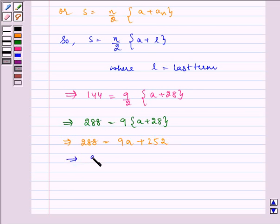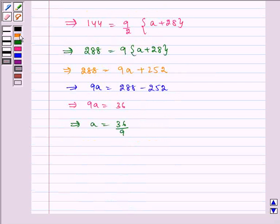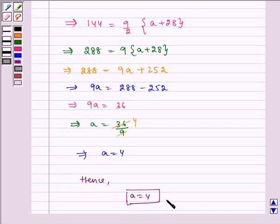Which implies 9A is equal to 36. Which implies A is equal to 36 divided by 9, which gets cancelled by 4. So it implies A is equal to 4. Hence, A is equal to 4 is our required answer.